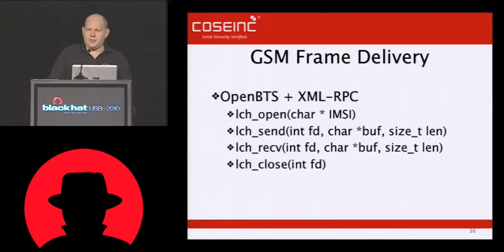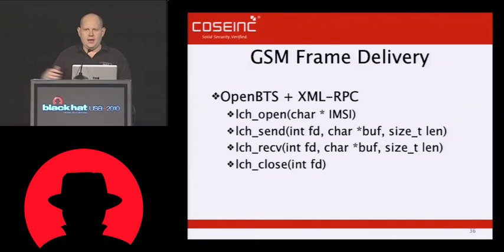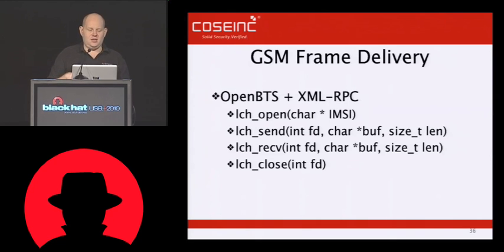Basebands are the target we're going after. The way we've done this is we took OpenBTS, which is an open source project that uses the USRP — the Universal Software Radio Project — and we've modified it to allow third-party programs on the network to open a channel to a phone and send data. We implemented over XML-RPC: LCH open, LCH send, LCH receive, and LCH close. We used the BugMine framework, developed by my coworker Ben Nagy.